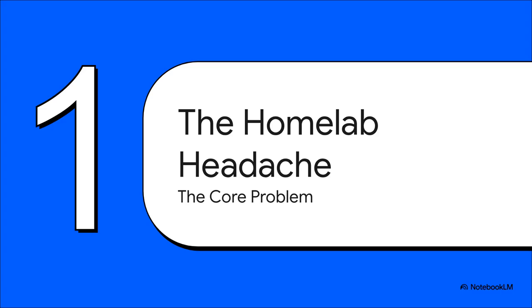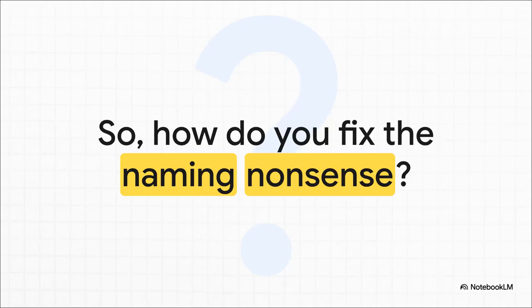But actually getting to them is just a complete mess. You want that clean, secure access when you're out of the house, but you also want that super fast, direct connection when you're sitting on your own couch — and you want it all without those constant "Your connection is not private" errors. So what is the answer to all this naming nonsense? How do you finally untangle that web?